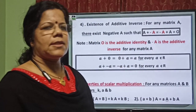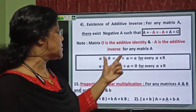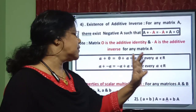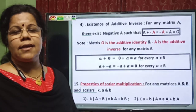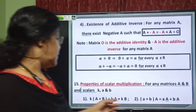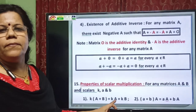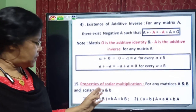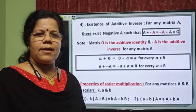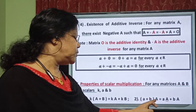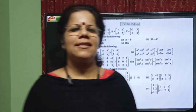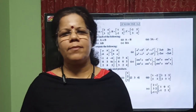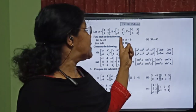The zero matrix is the additive identity, and negative A is the additive inverse — these two concepts are very important. The next property is properties of scalar multiplication. If k is a scalar and A and B are two matrices of the same order, then k(A plus B) equals kA plus kB. Similarly, if a and b are two scalars and A is any matrix, then (a plus b)A equals aA plus bA. Let us now see some problems using addition as well as scalar multiplication.